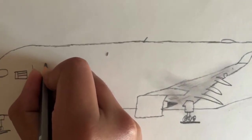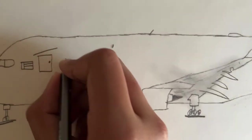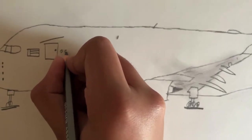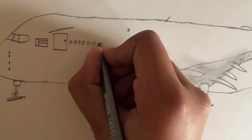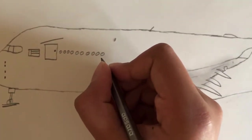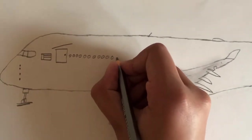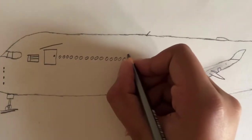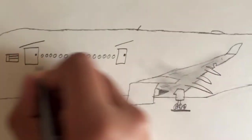And now you draw the front door at this point. Now we will start drawing the windows. Another door here. These two doors are used for boarding.